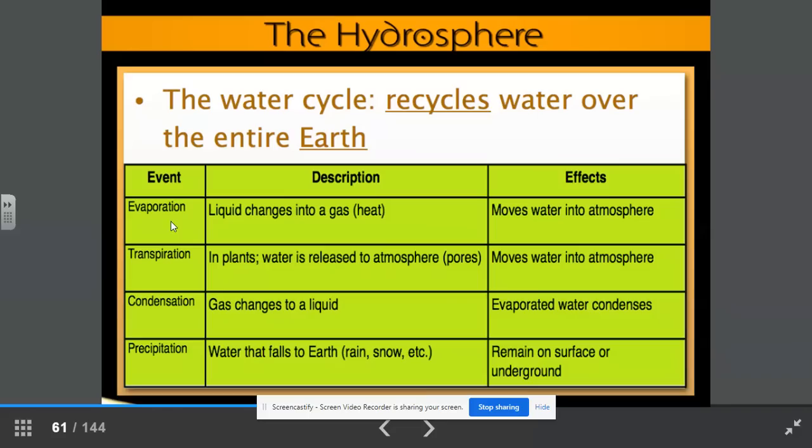Let's talk about the different parts or the different phases of the water cycle. We have evaporation, where liquid changes into a gas when it's exposed to heat. This moves water into the atmosphere. Transpiration occurs in plants. Water is released into the atmosphere through the pores of the plants. This moves water into the atmosphere. Condensation is when gas changes to a liquid. For example, up in the clouds, they become too full. Precipitation happens so that the water can fall back to earth. Evaporated water condenses and it turns into precipitation.